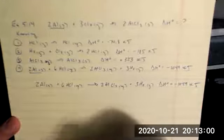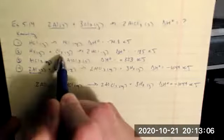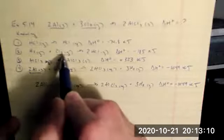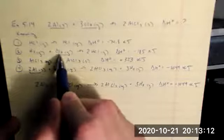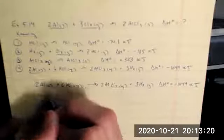Now, how about Cl2? Cl2, which I want in my overall equation only appears in equation two. But equation two only gives me a single chlorine as a reactant. I want three of them. So I'm going to triple reaction two when I write it down here.